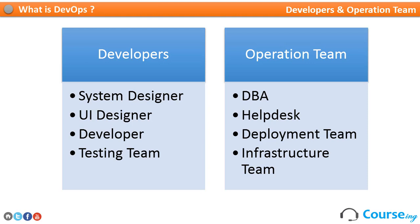The operation team includes a DBA team — responsible for changes required in the database — a help desk team where feedback from clients comes in and is passed to developers, a deployment team, and an infrastructure team. These are crucial teams mainly responsible for deploying milestones on the hosting servers. In a small organization you might have three to five servers, but in a large organization you might have 100, 200, or 500,000 servers — so making sure changes are deployed across all servers is a very important role.